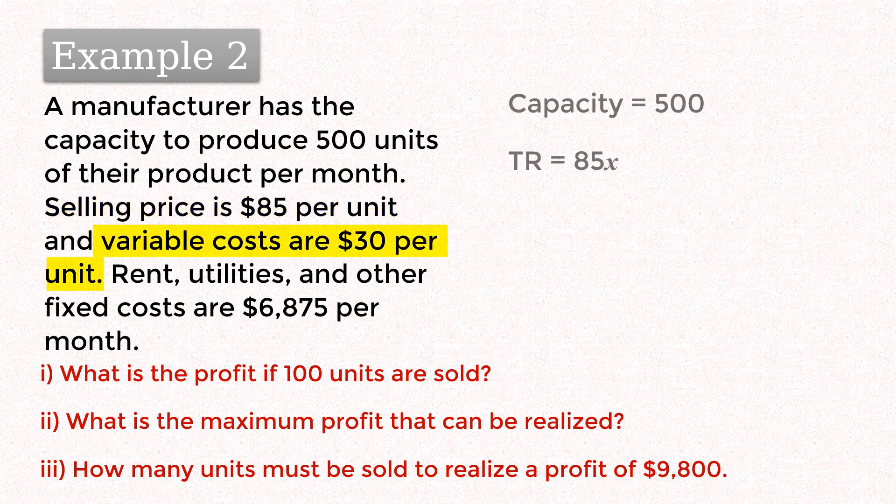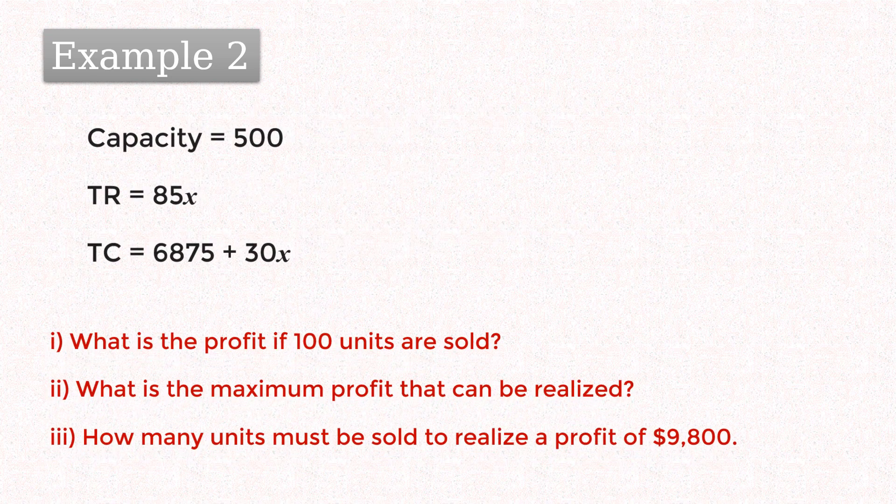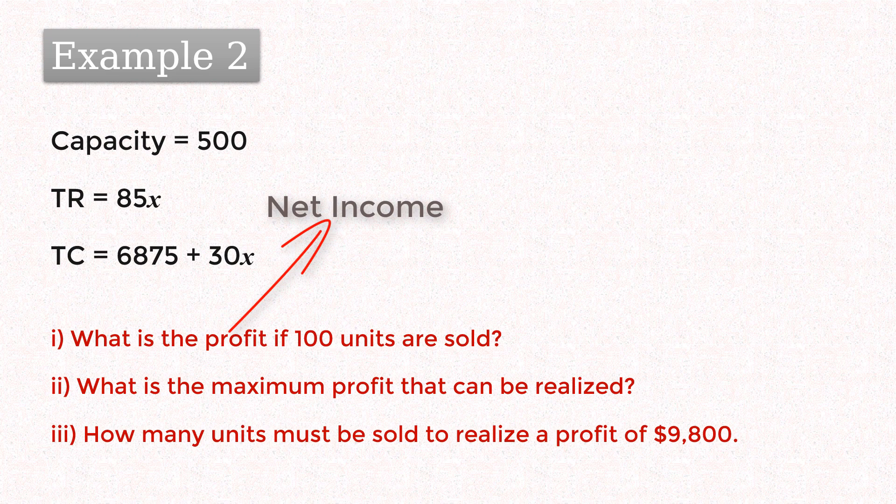Variable costs are $30 per unit and fixed costs are $6875. Thus the total cost is $6875 plus 30x. Now, what we're calling profit here is actually net income or operating profit. That is, revenue minus total cost before deducting other expenses.